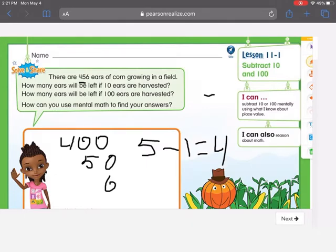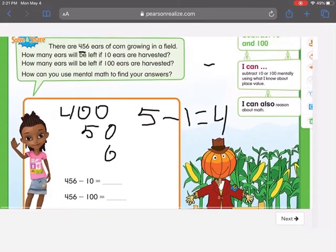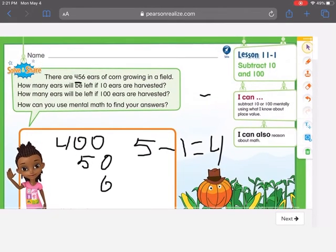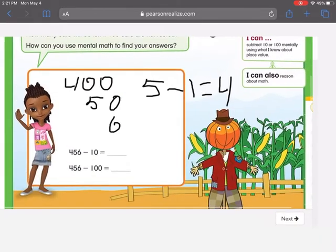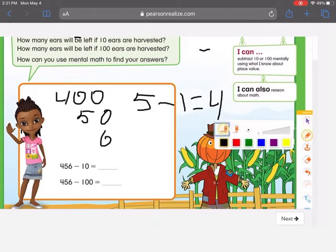Did we do anything to the 400 or the 6? We did not. Because we're only subtracting 10 so there's nothing happening to the hundreds place and there's a 0 in the ones place so the 6 gets left alone.